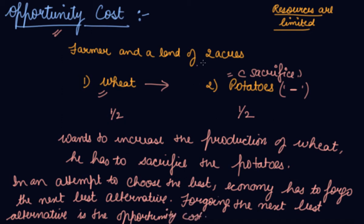You've had the opportunity to produce the potatoes as well. But in order to increase wheat, which is your best alternative, your next best alternative is potato. In order to manufacture your wheat, you are sacrificing your next best alternative, that is potatoes. This is your opportunity cost.